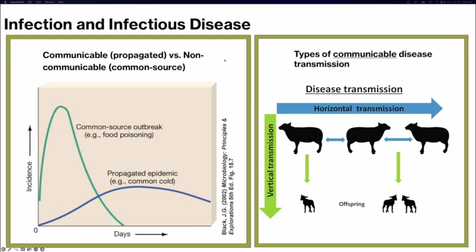Communicable versus non-communicable diseases. A communicable disease is one that can be transmitted from human to human or host to host. A non-communicable disease comes from a common source and is not transmitted from host to host — an example would be food poisoning, such as if everyone at a picnic ate bad potato salad. Incidence of new cases would be high for a short time, then go away as people recovered. A propagated or communicable disease like the common cold can be transmitted host to host throughout a population, so incidence fluctuates but never really leaves the population.